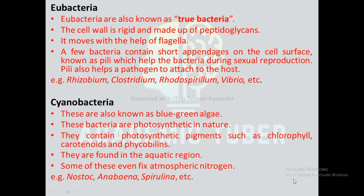Cyanobacteria: These are also known as blue-green algae. These bacteria are photosynthetic in nature. They contain photosynthetic pigments such as chlorophyll, carotenoids, and phycobilins. They are found in aquatic regions. Some of them even fix atmospheric nitrogen. Examples: Nostoc, Anabaena, Spirulina, etc.